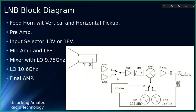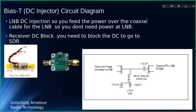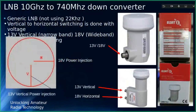The bias-T power injector has a little inductor that blocks RF from reaching your power supply, and a decoupling capacitor that blocks DC from reaching your SDR. You can either turn the LNB if using a single-port LNB, or with a dual LNB put 13 volts on one port and 18 volts on the other to receive both narrowband and wideband signals simultaneously.